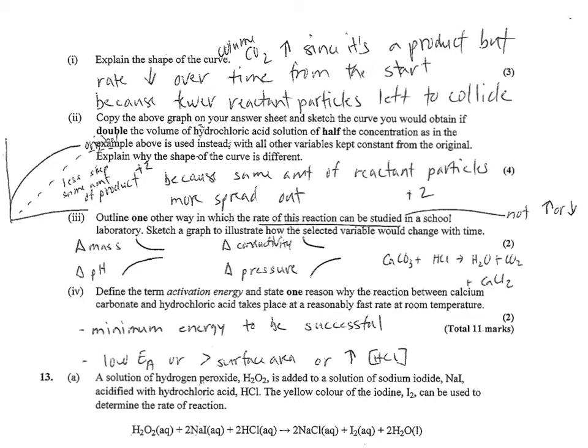Then number two, sketch a curve you'd obtain if you had double the volume but half the concentration. Similar to an earlier question, double the volume and half the concentration means two times the half, so overall I've got the same moles of hydrochloric acid. My yield is going to be the same. I'm going to reach the same end point eventually, but I'm going to do it much more slowly with a weaker concentration because the particles can't find each other or collide as easily.